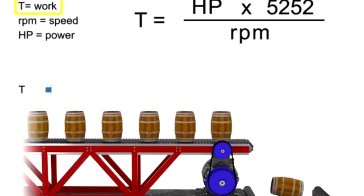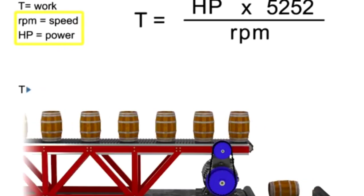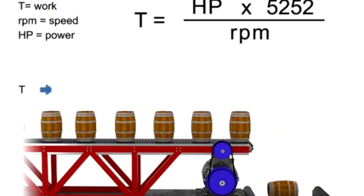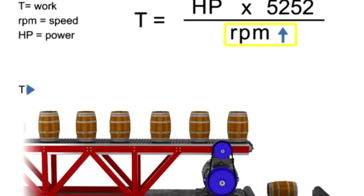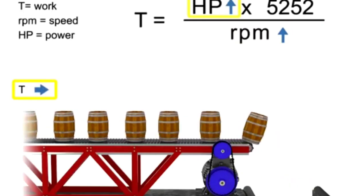If torque remains constant, speed and horsepower are proportional. As the speed, or RPM, increases, horsepower increases to maintain constant torque.